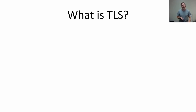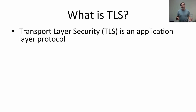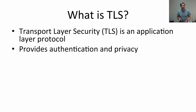Before we can talk about TLS in the kernel, we need to say what TLS itself is. TLS is transport layer security — not thread local storage. TLS is an application layer protocol that typically gets layered over transport protocols. The role of TLS is it provides authentication and privacy so that you have confidence about who you're talking to at the other end of the connection, and you're able to exchange data that other people cannot observe.